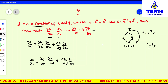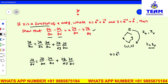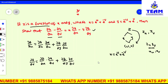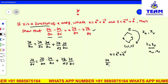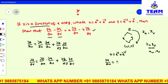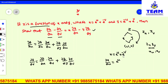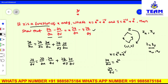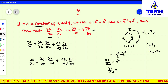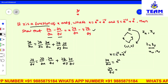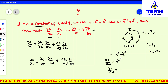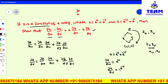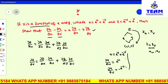Now, from the given information: x = e^u + e^(-v). So differentiating x partially with respect to u: the derivative of e^u is e^u, and e^(-v) has no u term, so its derivative is zero. Thus ∂x/∂u = e^u. For ∂x/∂v: e^u has no v term so its derivative is zero, and the derivative of e^(-v) is e^(-v) times minus 1. So ∂x/∂v = minus e^(-v).